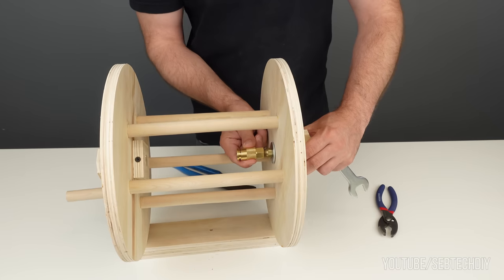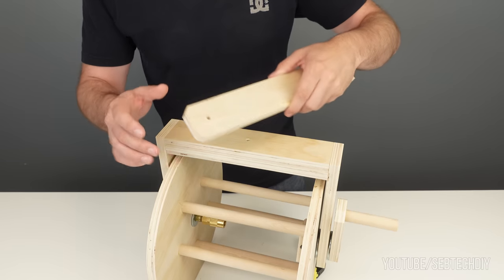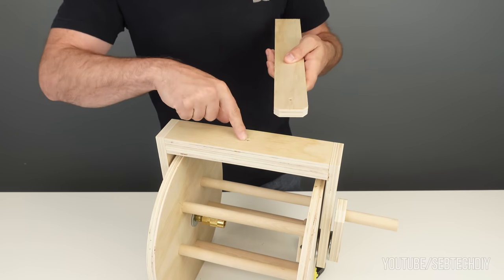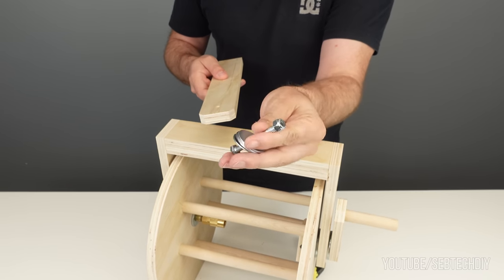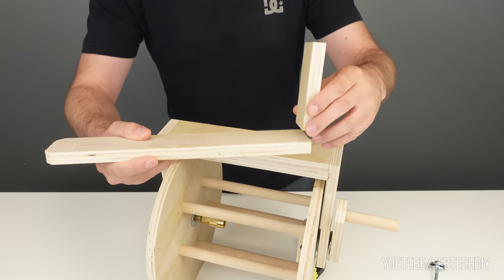I still need to build the wall mount bracket. I start with a piece of plywood and I drill a 1/4 hole in it. This will allow me to connect the wall bracket to the reel support using a 1/4 by 2.5 inch long bolt.